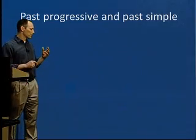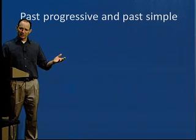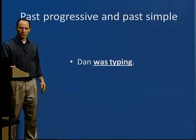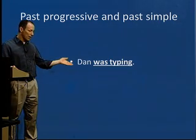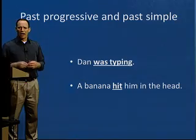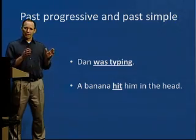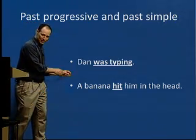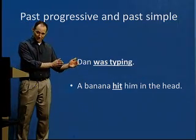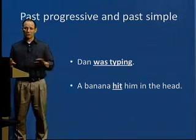So with that video, we had two actions. We see typing, and then — I don't know if you noticed it — there was a banana that hit Dan on the head. So first, Dan was typing; that action was in progress. Then a banana hit him on the head. A quick note about the verb 'hit': this sentence is in past simple because 'hit' is an irregular verb. The present tense of 'hit' is 'hit,' the past is 'hit,' and the past participle is 'hit.' There's no change with that verb.